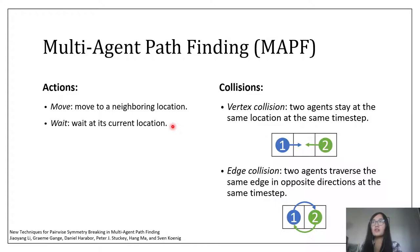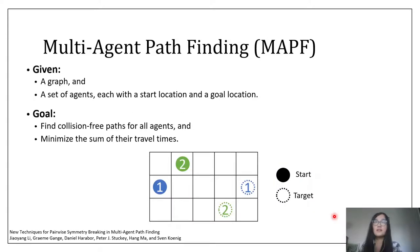We assume there are two types of collisions. The first one is called a vertex collision, which happens when two agents stay at the same location at the same time step. The other is edge collision, which happens when two agents travel through the same edge in opposite directions at the same time step. Based on these assumptions, our task is to find collision-free paths for all agents and minimize the sum of their travel times.